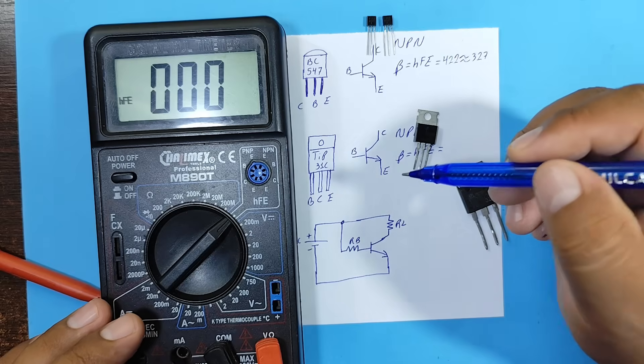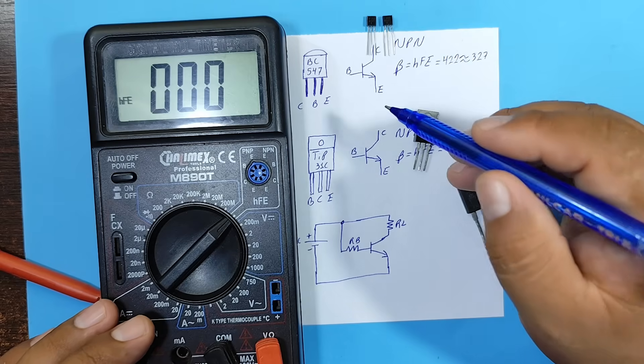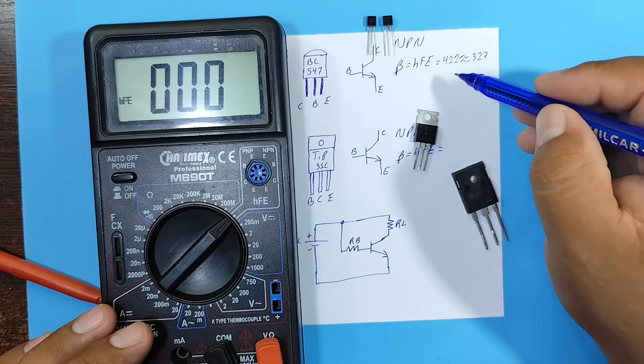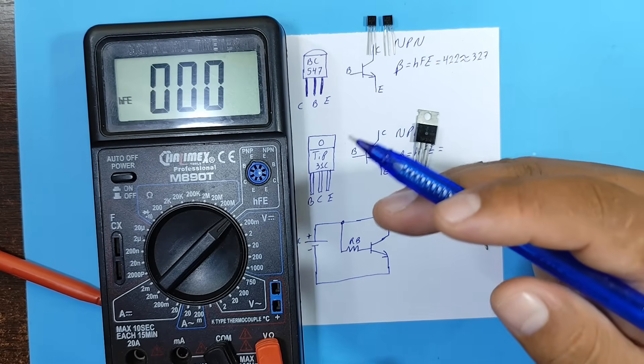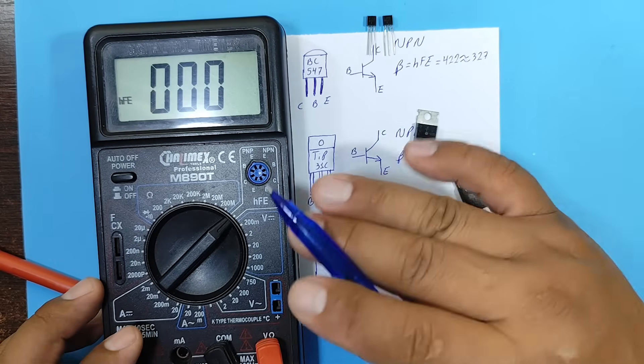That's why it's very important in audio amplifiers to choose transistors with similar gains. To ensure the resulting signals are symmetrical, meaning there are no distortions.